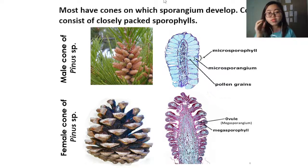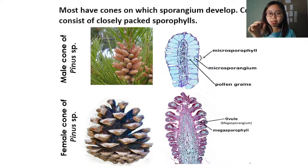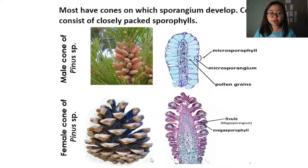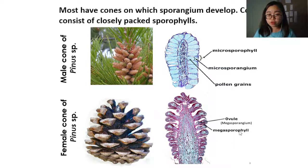We're going to look at the cone structures once more. These are zoomed-in pictures of the cones. The male cones are the smaller cones that cluster together on pine trees. Inside male cones: microsporophyll, inside that microsporangium, inside that pollen grain. The pretty pine cones you find on the ground or used as Christmas decorations are the female cones — they are usually bigger. The female cone consists of closely packed megasporophylls, and inside the megasporophyll is the ovule or megasporangium.